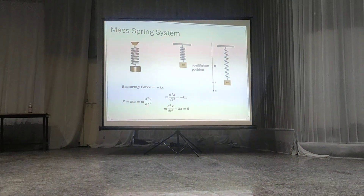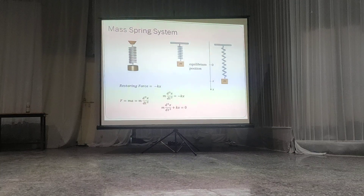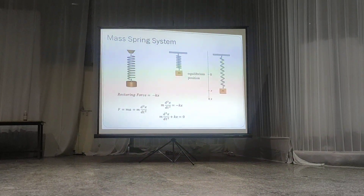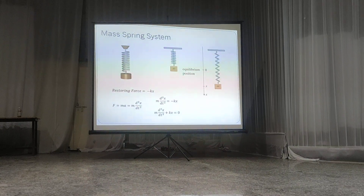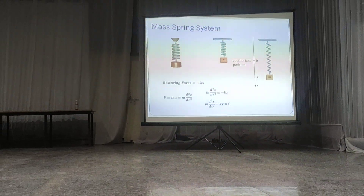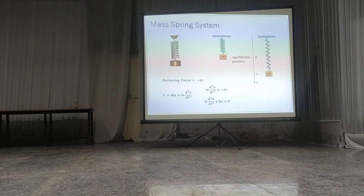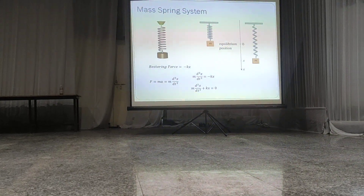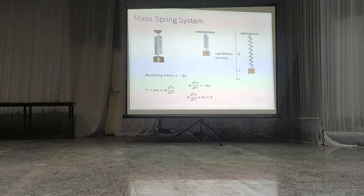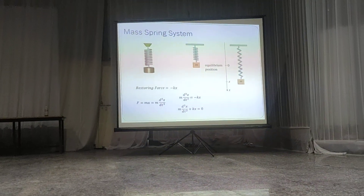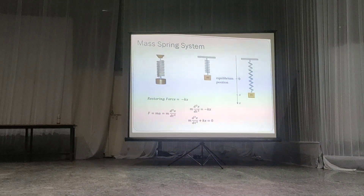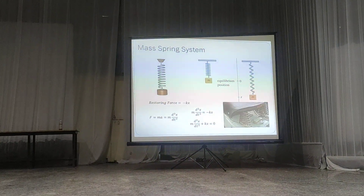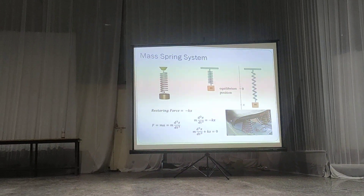If you want to know the position of the mass, you need to know x at time t. Or if you want to design a mass-spring system, you need to know — for mass m equal to 1 kg, what spring constant should you take? To find that, you need to solve the system. This is one example of a mass-spring system. Do you know old scooters? That is how a spring is attached to your seat.